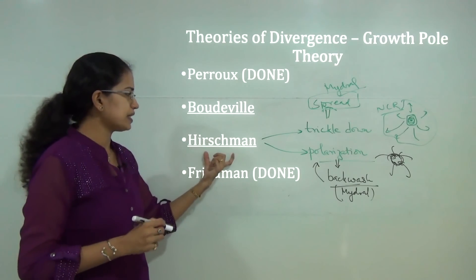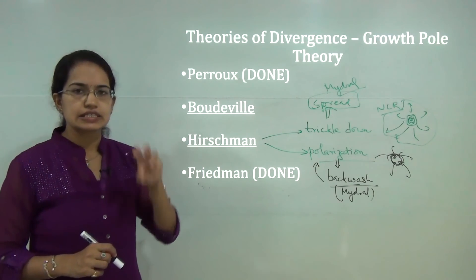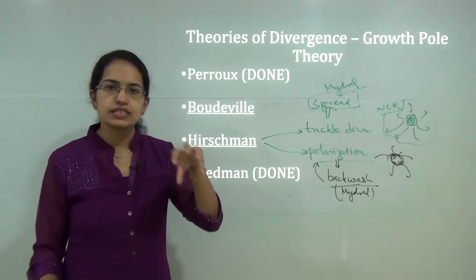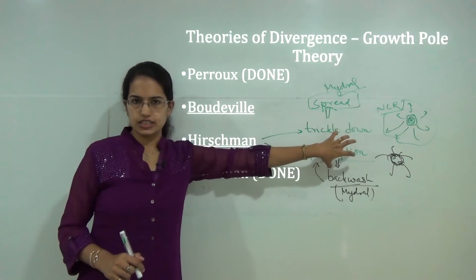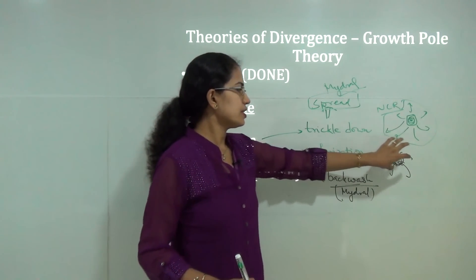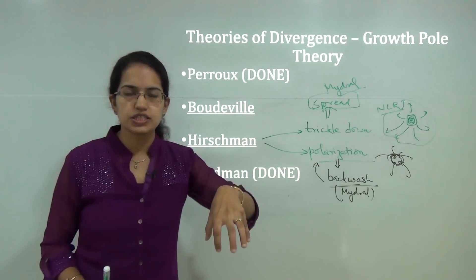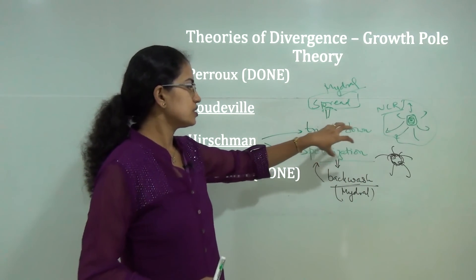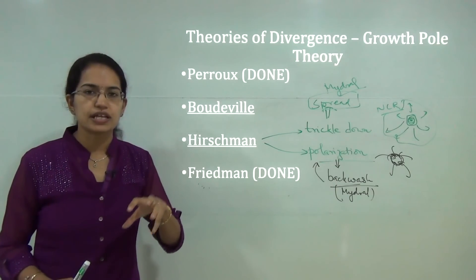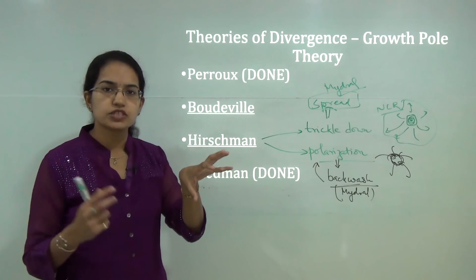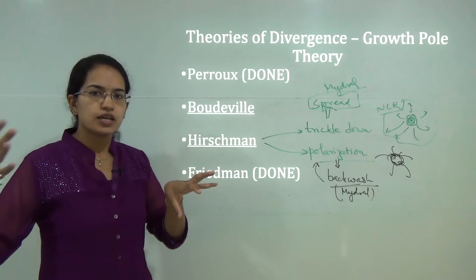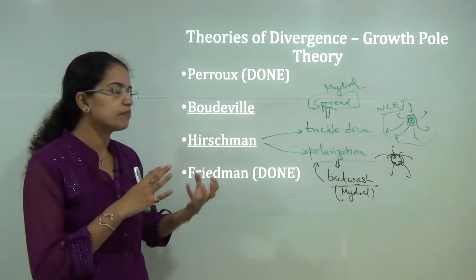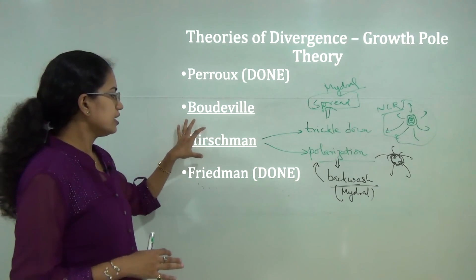Basically, Hirschman's main idea was to emphasize external economies. He explained that investors concentrate in the polarization zone because they perceive the region as already prosperous with good potential — making future returns higher. He said regions that are already flourishing will flourish further at a faster pace, while backward regions will become further backward.